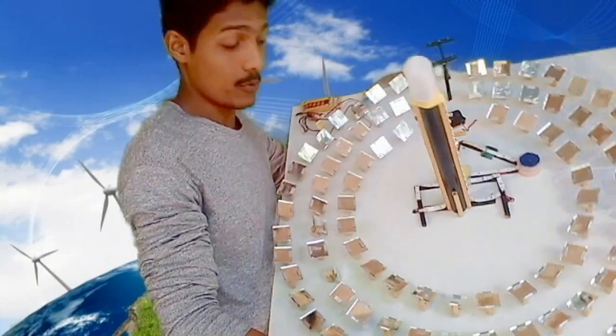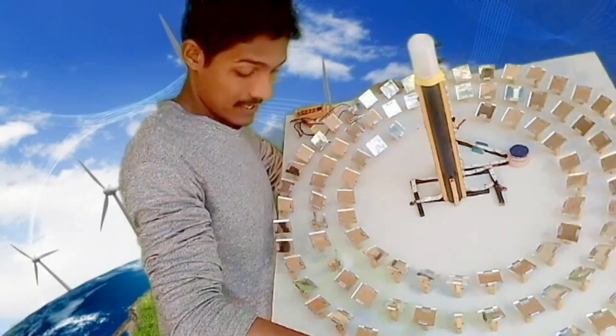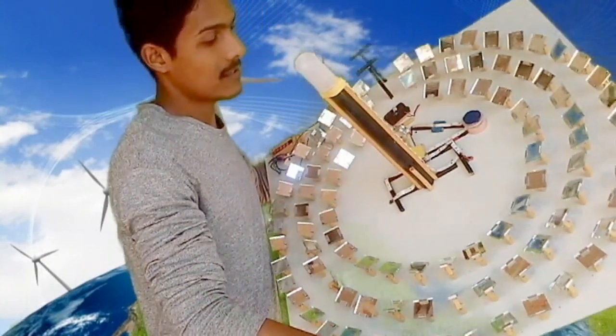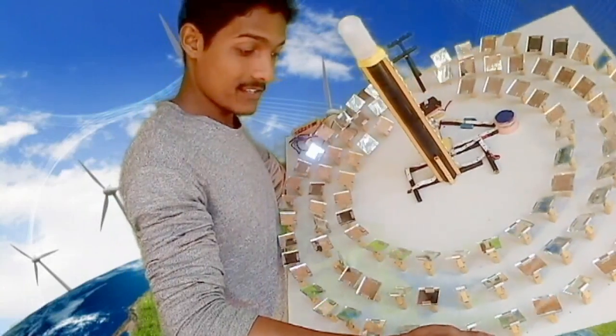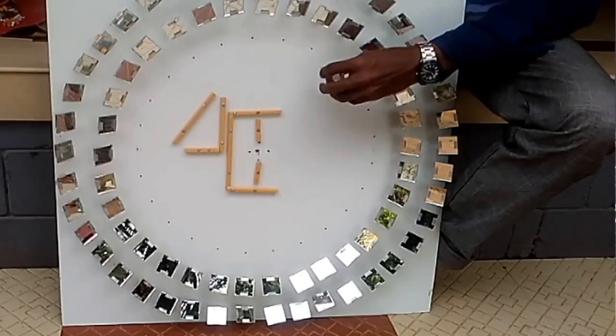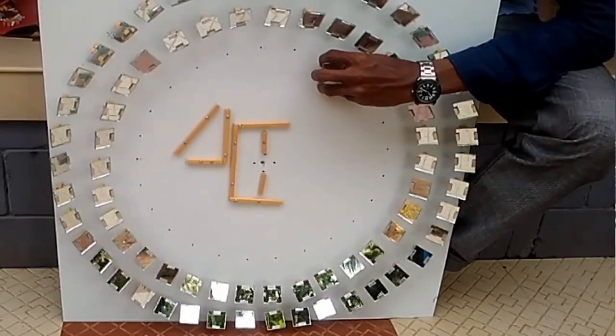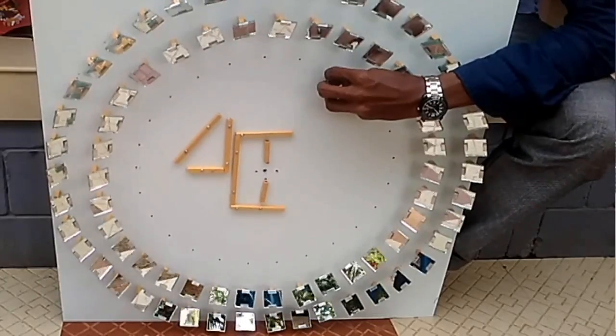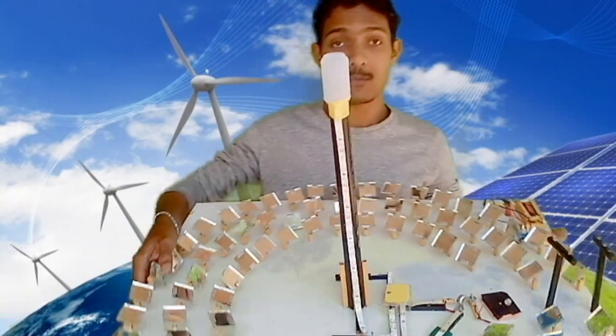This is the model that I have created to explain the working principle of a CSP. There are 96 heliostats which are used to concentrate sunlight. It's beautiful, right? It took a lot of hard work. Now let me explain how this works.